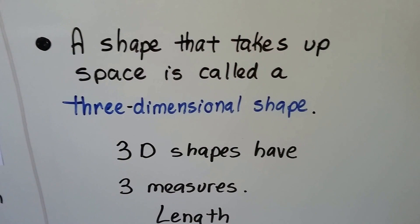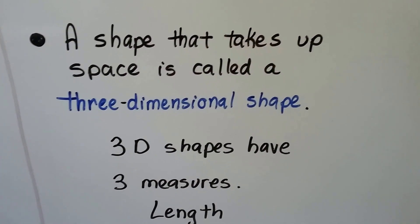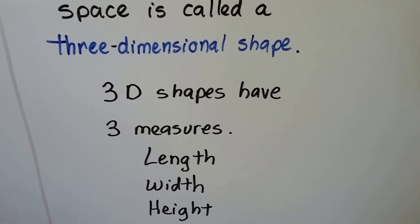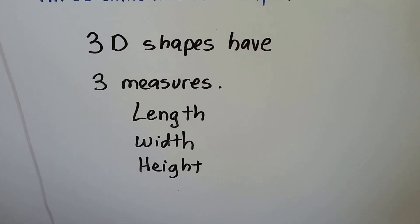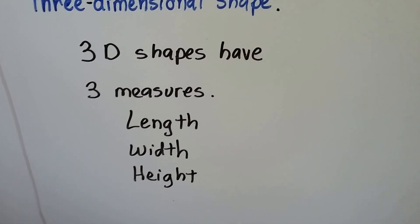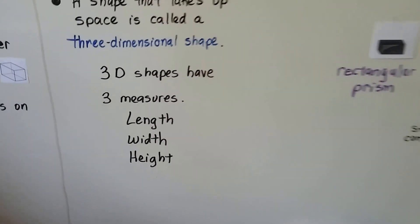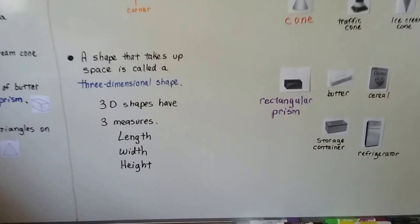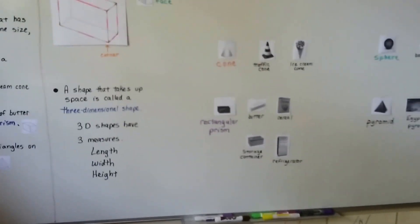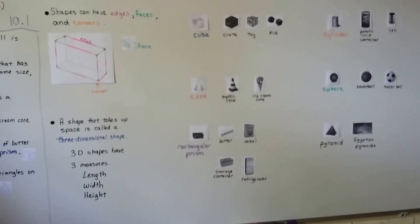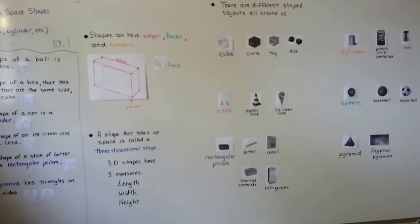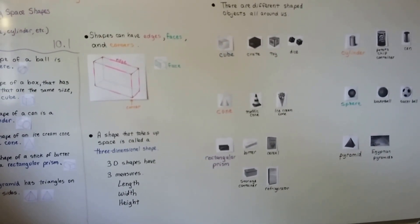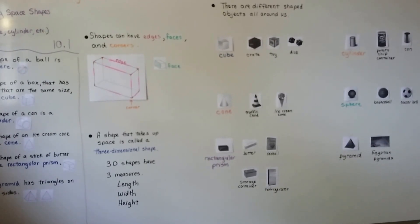These are shapes that take up space — they're three-dimensional shapes with three measures: length, width, and height. They're not flat like a piece of paper. In the next video, we're going to talk about how one of the sides of these shapes can be used to trace and make a flat shape. See you there!